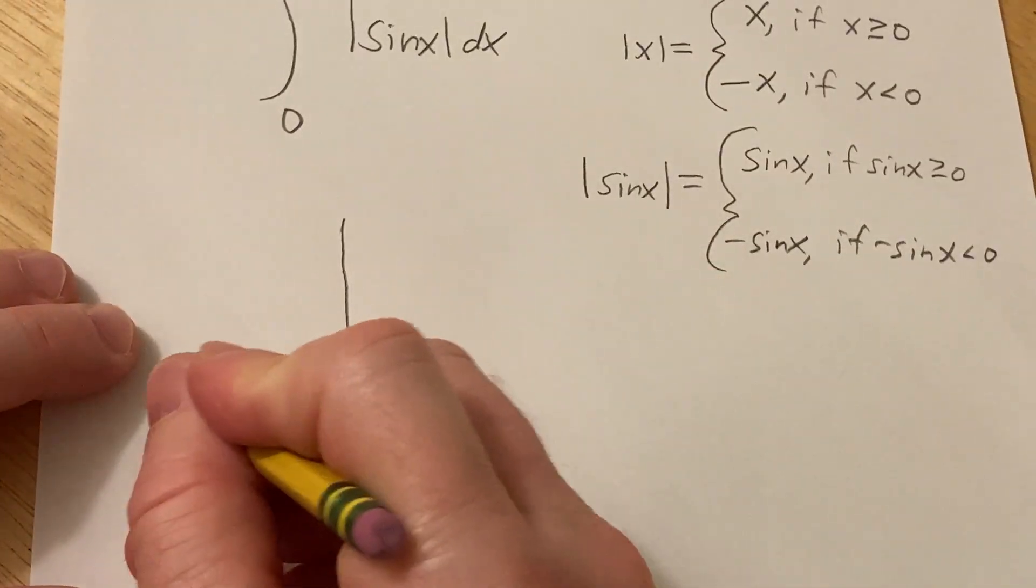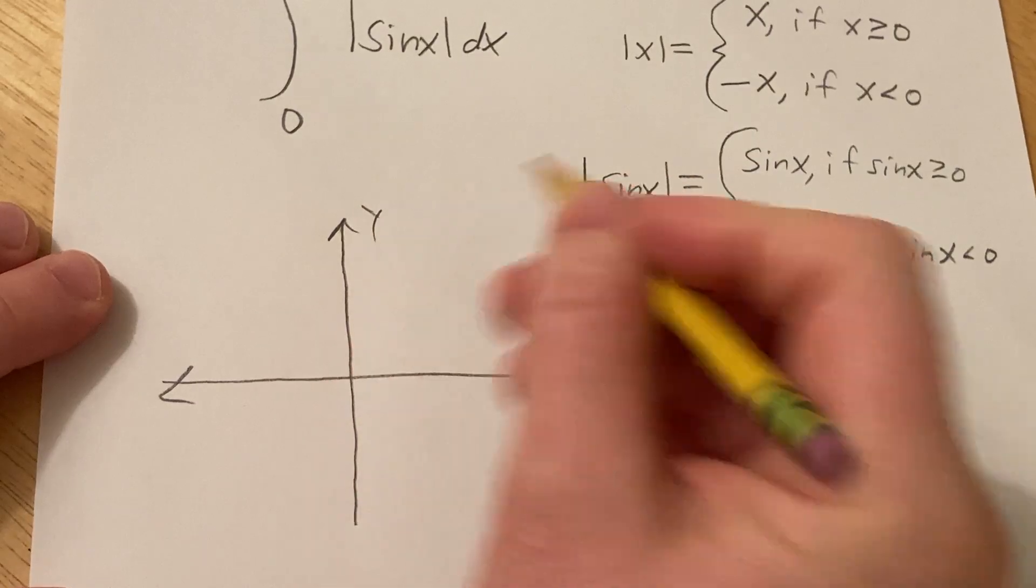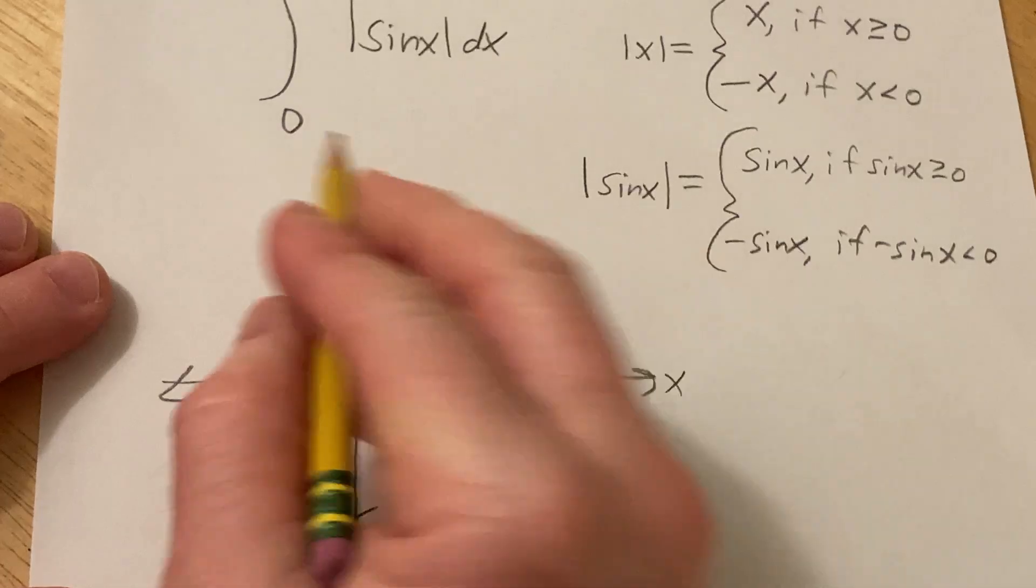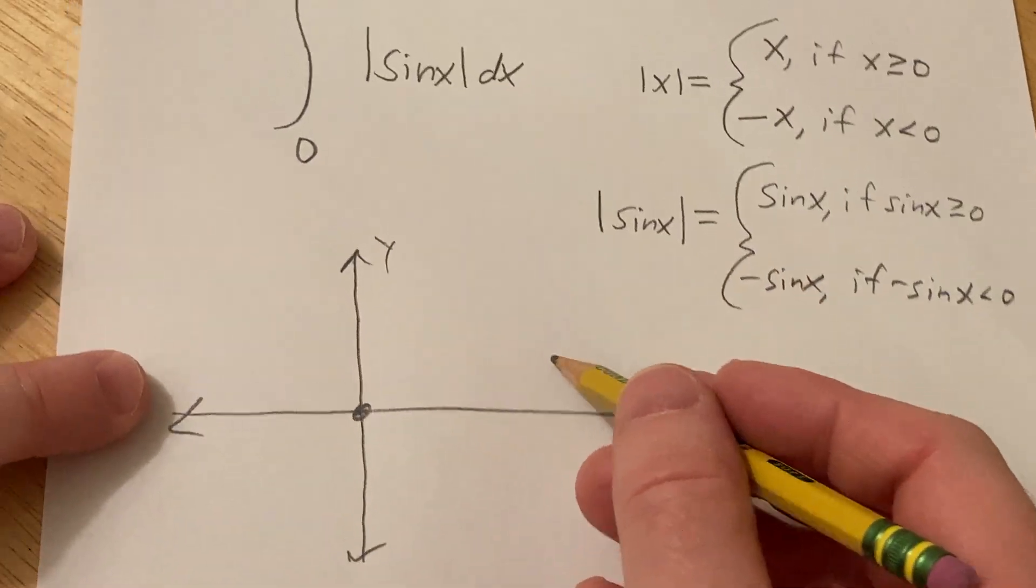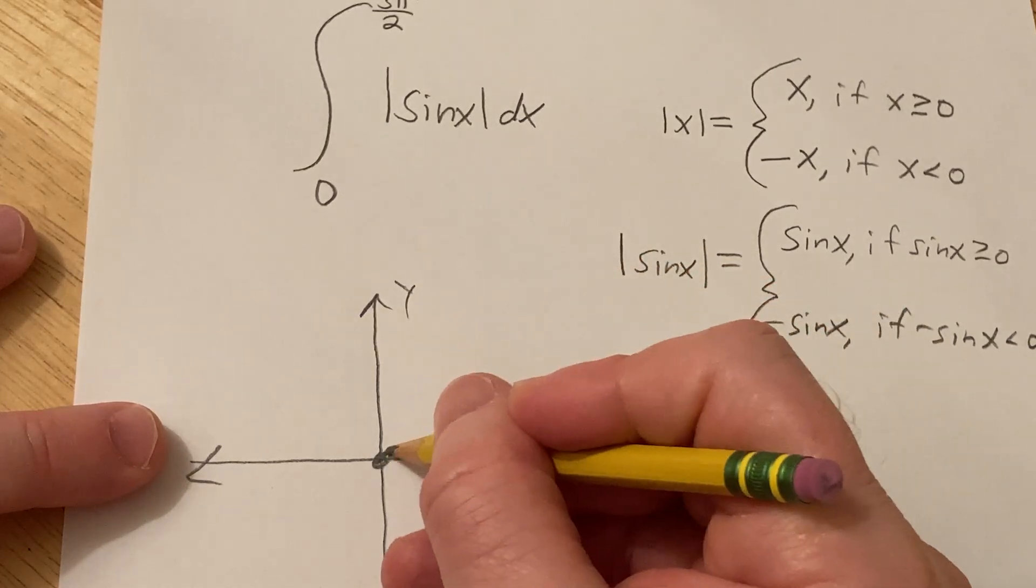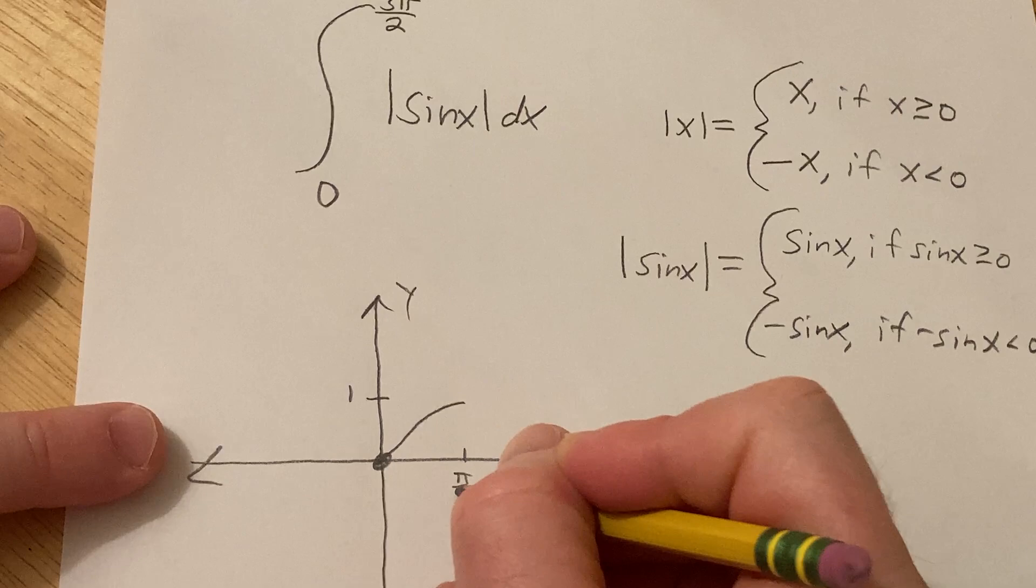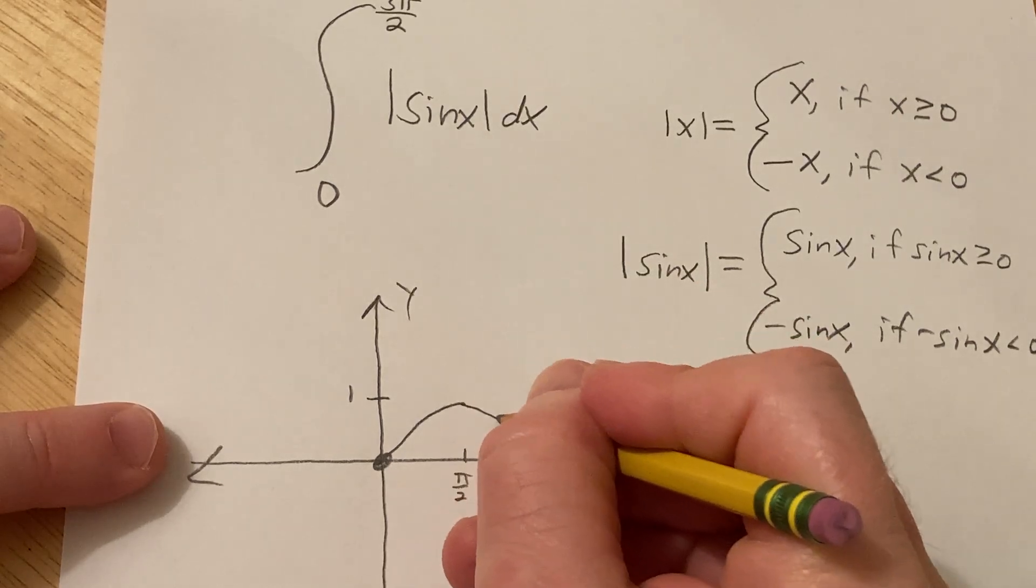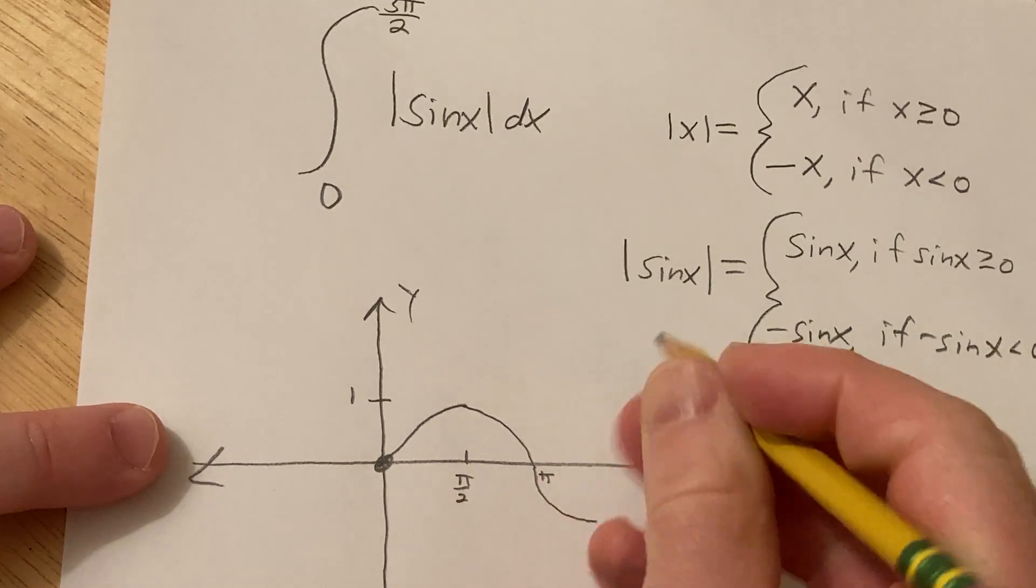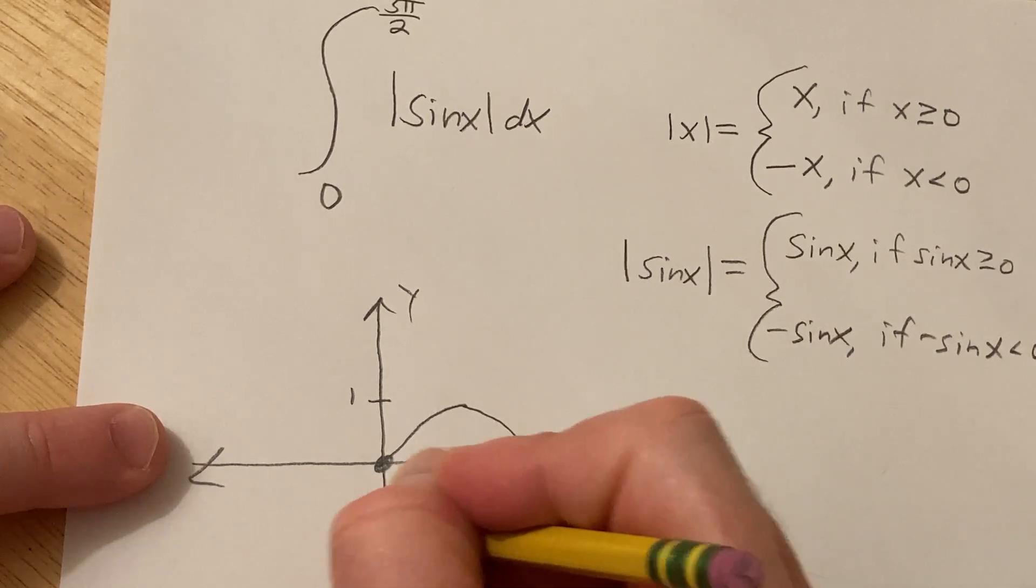So here's the y-axis, and here's the x-axis. So this is y, and this is x. Sine of 0 is 0, so we'll start here. And that makes sense because we're starting at 0. And we're going all the way to 3 pi over 2. So sine of pi over 2 is going to be 1. And then we come back down to pi, it's going to be 0. And then we come back down to 3 pi over 2. And this value here is negative 1.